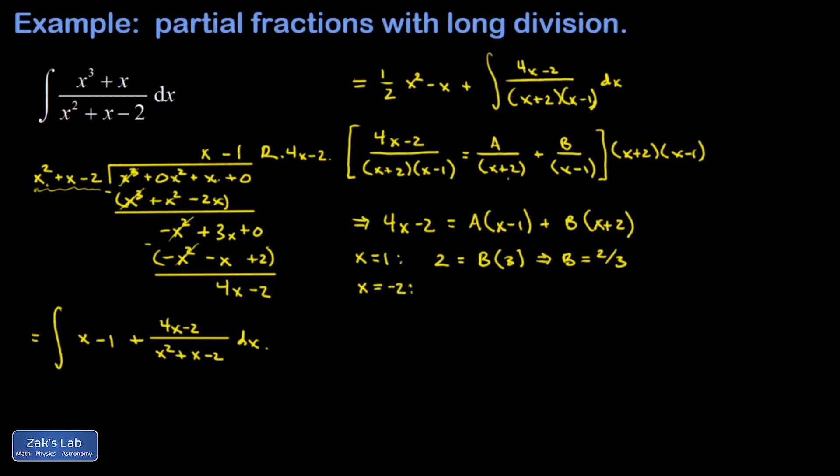Then using a similar trick, I sub in x equals negative 2, and then the B containing term will die. On the left-hand side, I get negative 8 minus 2 or negative 10. On the right-hand side, I get A times negative 3. So A is going to be 10 thirds.